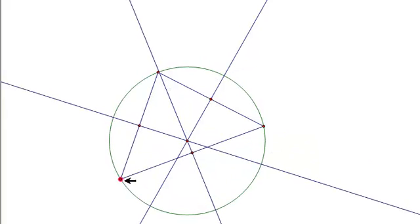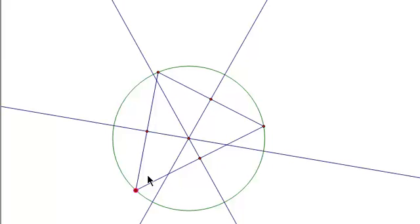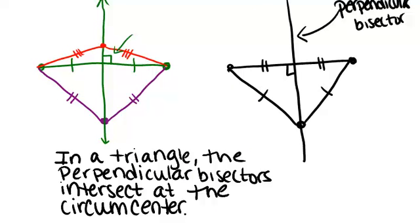So the circumcenter, created by finding the perpendicular bisectors of all three sides of the triangle, is the center of the circle that goes through all three vertices of the original triangle. In a triangle, the perpendicular bisectors intersect at the circumcenter, which is the center of a circle that passes through all three vertices. This is really interesting because it works for any triangle.